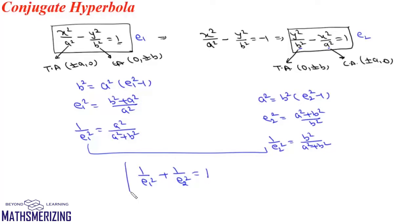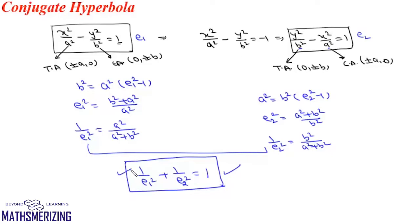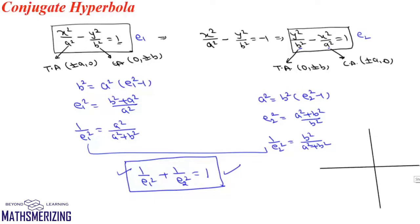So the relationship between the eccentricities of conjugate hyperbolas is 1/e₁² + 1/e₂² = 1. To write the equation of the conjugate hyperbola for a given hyperbola, simply replace 1 with -1. We'll now draw these conjugate hyperbolas along with their axes and asymptotes.